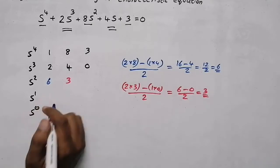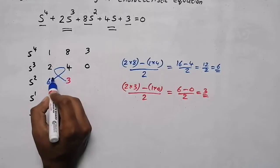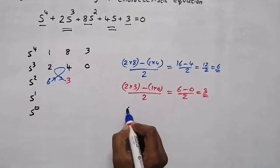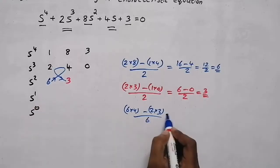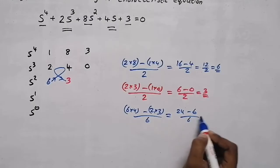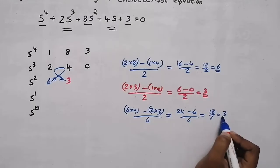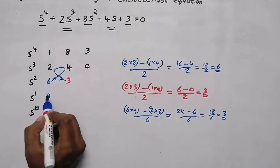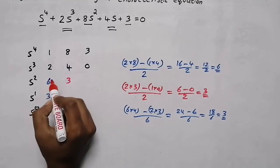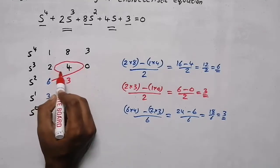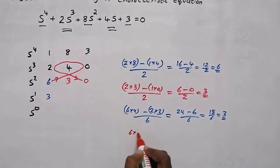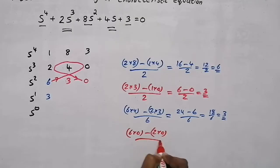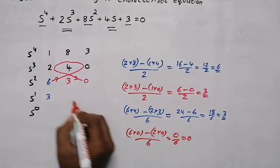Now we need to find the s¹ row elements. Starting from 6, the direction goes like this: 6 into 4 minus 2 into 3, divided by 6. That gives 24 minus 6 equals 18, divided by 6 — the answer is 3. For the second element, starting from 6: 6 into 0 minus 2 into 0, divided by 6 — the answer is 0. So the two elements are 3 and 0.